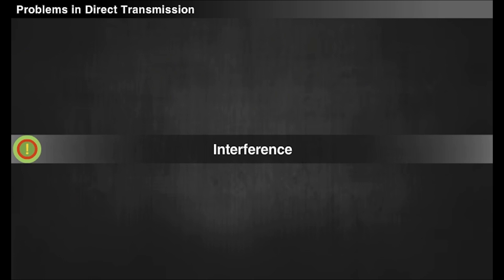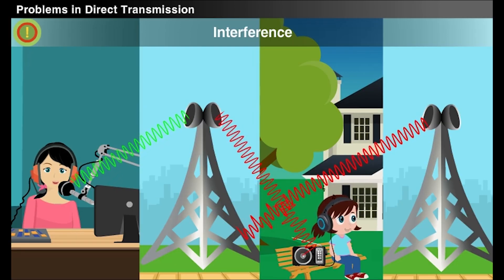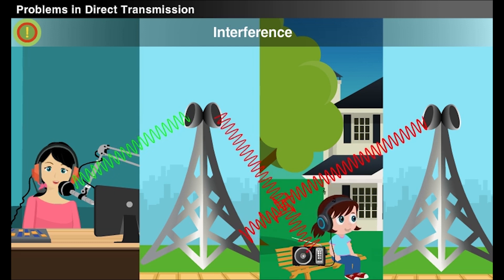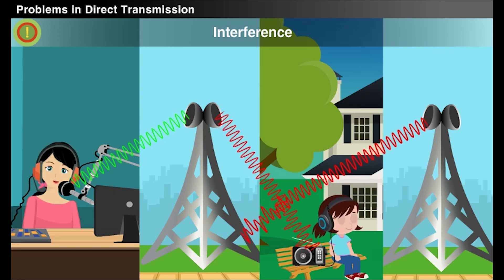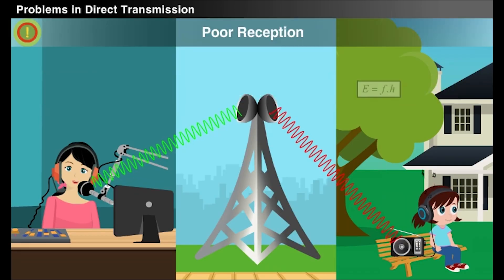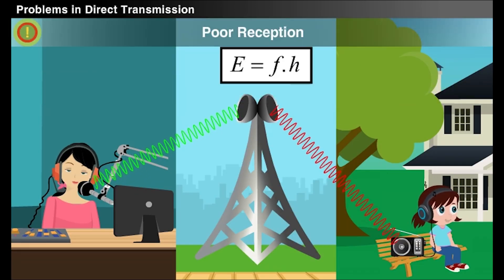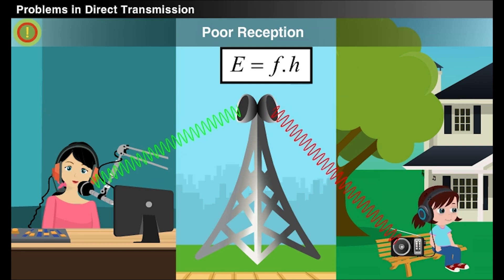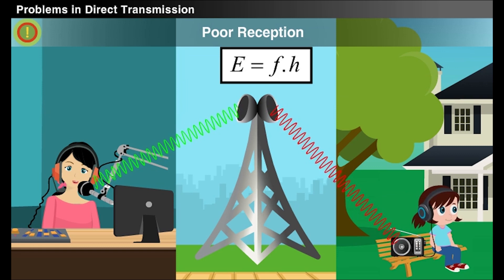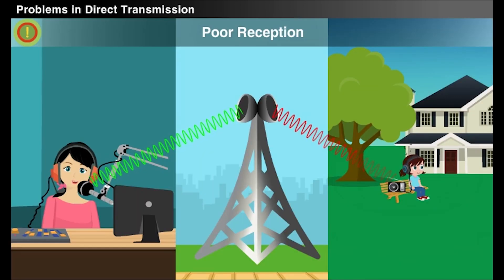The second problem is interference. If there is more than one base station in a city, then the signals with same frequency get mixed up with each other. The third problem is poor reception. As per the equation representing the energy of the electromagnetic wave, it is clear that the energy of low frequency signal is very low.